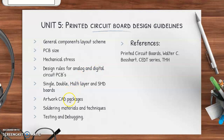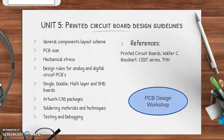We will also look at design rules for analog and digital PCBs, different types of boards, artwork packages, and details of soldering, testing, and debugging. By the end of Unit 5 you should be able to list and explain all important PCB design steps. The reference is the book 'Printed Circuit Boards' by Walter Boshan. Additionally, a PCB design workshop will be conducted in our department for hands-on practice, developing a PCB from scratch.